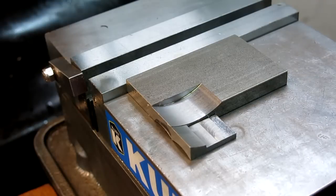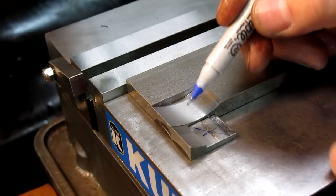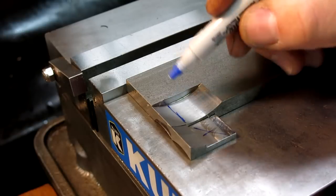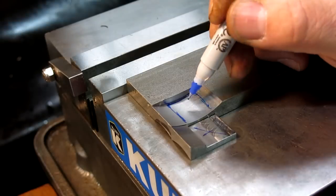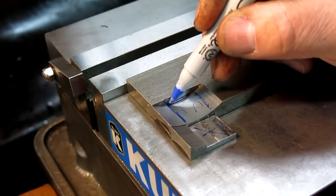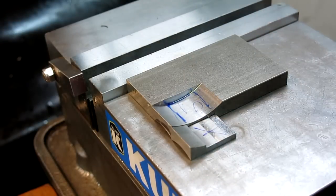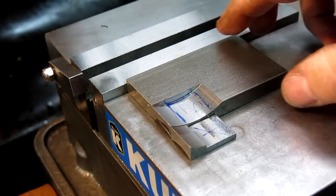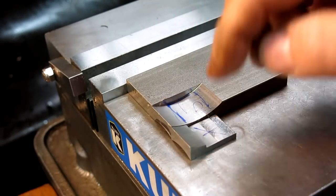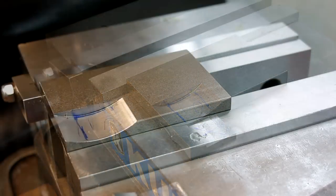Alright, so the last bit here, second to the last bit, is we have to create this shelf here. So we're going to do a little milling action there and kind of carve that out down to that floor there. So let me get rid of this boring bar and get an end mill up in there and then we'll mill that.